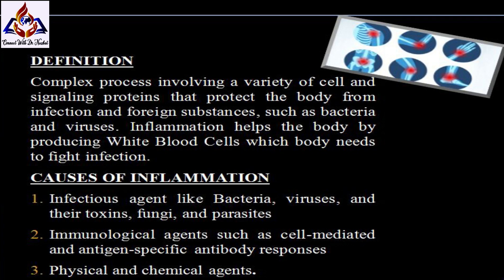When the inflammation process starts, chemicals in white blood cells are released into the blood and the affected tissues to protect the body. These chemicals increase blood flow to the infected or injured body areas, causing redness and warmth. They may also cause leaking of fluids into tissues, resulting in swelling. This protective process can also stimulate nerves and tissues, causing pain.